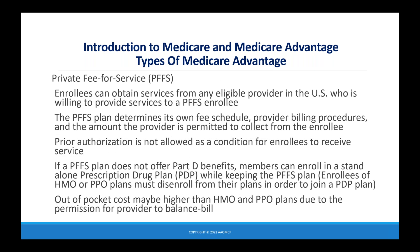Private fee-for-service enrollees can obtain services from any eligible provider in the U.S. who is willing to serve a PFFS enrollee. The PFFS plan determines its own fee schedule, provider billing procedures, and the amount the provider is permitted to collect from the enrollee. Prior authorization is not allowed as a condition for receiving service. If a PFFS plan does not offer Part D benefits, members can enroll in a standalone Part D plan while keeping the PFFS plan. Out-of-pocket costs may be higher due to the permission for a provider to balance bill.